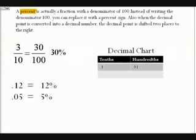A percent is actually a fraction with a denominator of 100. Instead of writing the denominator 100, you can replace it with a percent sign. Also, when the decimal point is converted into a decimal number, the decimal point is shifted two places to the right.